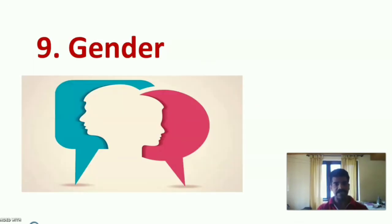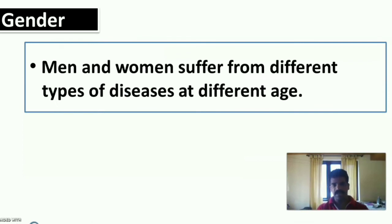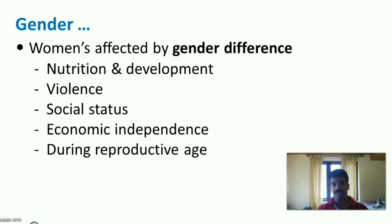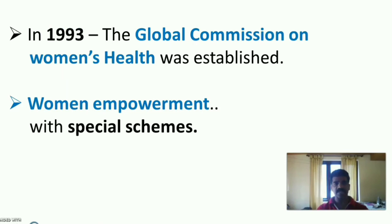The next major factor is gender. Men and women suffer from different types of disease at different ages. Women are affected by gender differences in nutrition and development, violence, social status, and economic independence, especially during reproductive age. In 1993, the Global Commission on Women's Health was established, which enhanced women's empowerment with special schemes and projects for the promotion and protection of women.